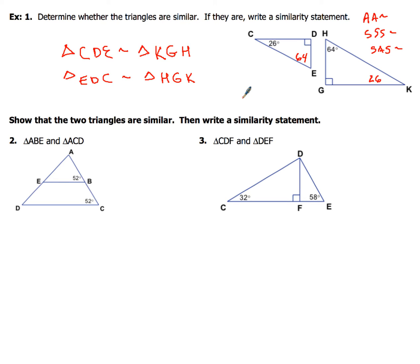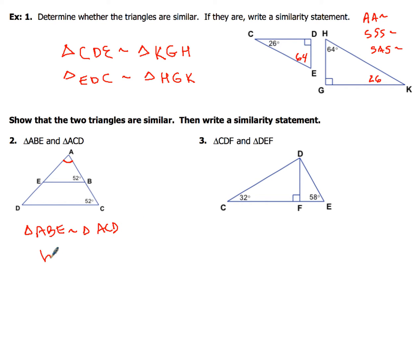For examples 2 and 3, it says show that the two triangles are similar, then write a similarity statement. In this first diagram I have a 52° angle here and another 52° angle in the other position. One angle shared by both triangles is angle A — by the reflexive property, any angle is congruent to itself. So triangle ABE is similar to triangle ACD by the AA angle-angle similarity postulate.